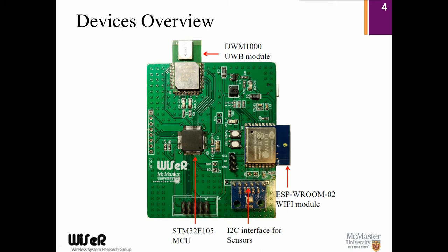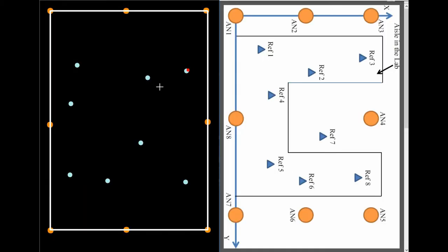Now I'll show a quick demo. The map on the left side is generated by the server code, and the right side is the floor plan of the testbed. The white rectangle is the boundary, and the orange circles are the positions of anchor nodes. They are deployed on the wall near the ceiling.